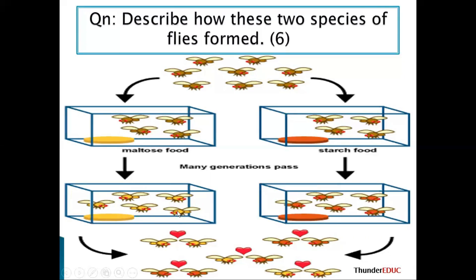The different genotype resulted in a different phenotype. If you remove the barrier and leave them to meet, they cannot interbreed to produce a fertile offspring. So this means that the two populations have become new species. Depending on the question given, you must look at which barrier, which kind of environmental conditions, which kind of species, and how many have become new species.